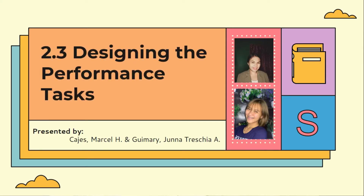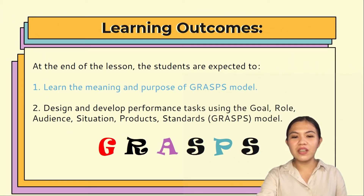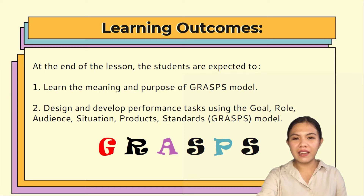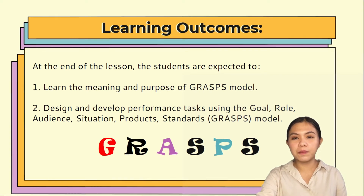Let's start with the learning outcomes. At the end of the lesson, the students are expected to: first, learn the meaning and purpose of the GRASPS model; second, design and develop performance tasks using the goal, role, audience, situation, products, standards — or the GRASPS model.